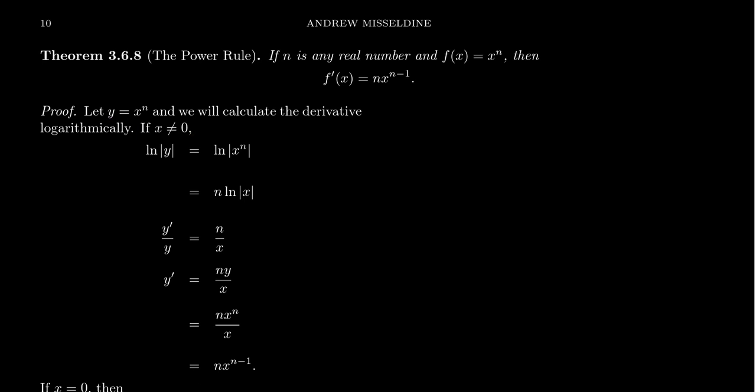So if we take the natural log of both sides, we'll get the natural log of the absolute value of y, which is equal to the natural log of the absolute value of x to the n. By properties of the absolute value, this becomes the natural log of the absolute value of x raised to the nth power, and then by properties of the logarithm, you can bring that exponent out in front as a coefficient, and we get n times the natural log of the absolute value of x.